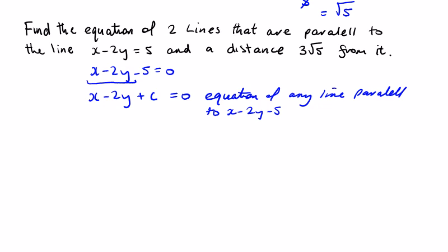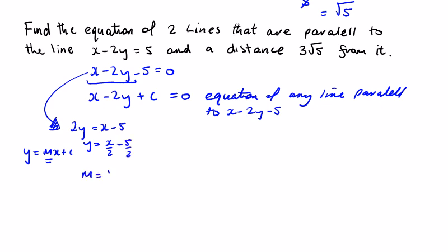We do a quick sketch of this line. Writing it in the form y equals mx plus c: 2y equals x minus 5, so y equals x over 2 minus 5 over 2, giving a slope of 1 over 2 — a positive slope. To get a point on the line, if y equals 0 then x equals 5, so (5, 0) is a point on the line.